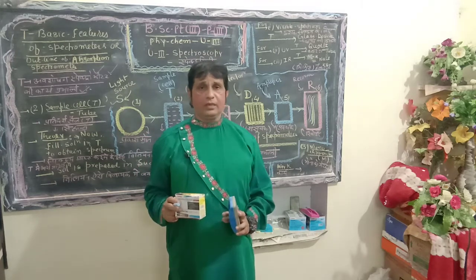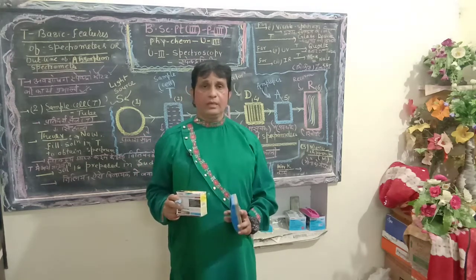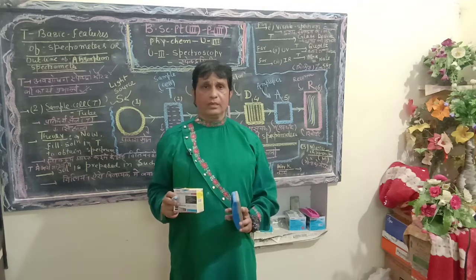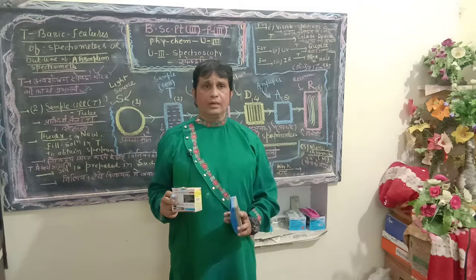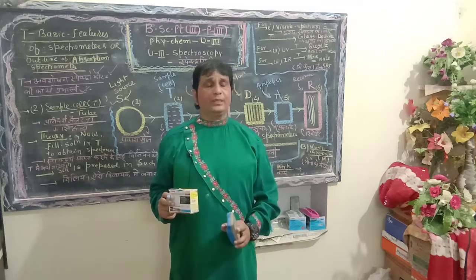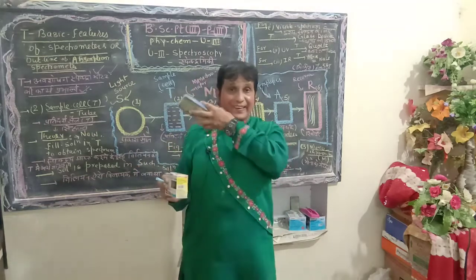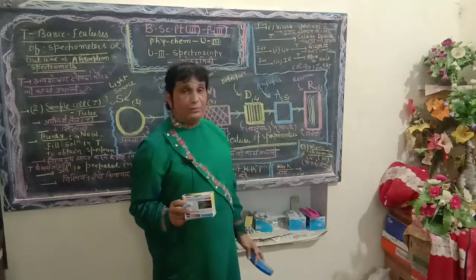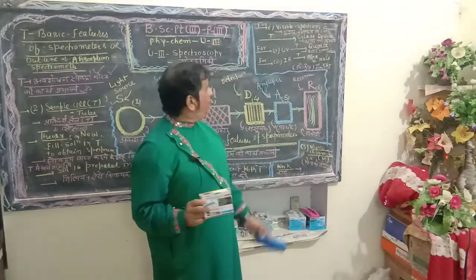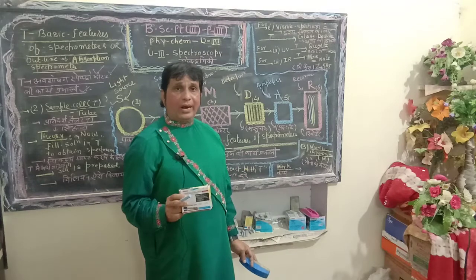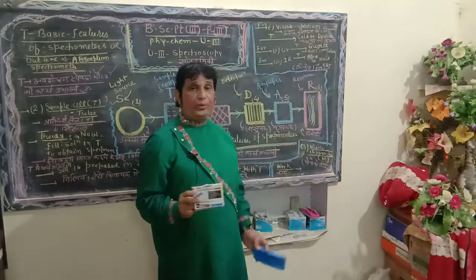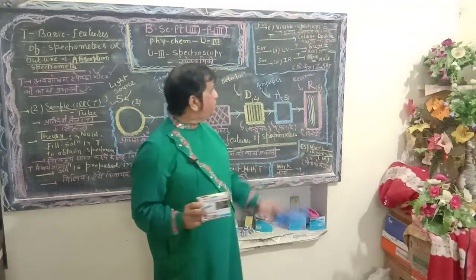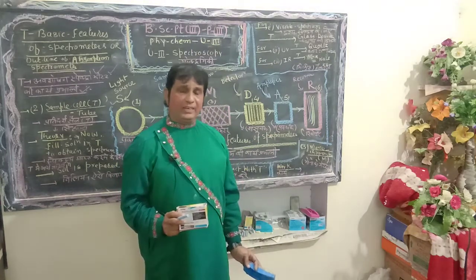For the production of visible spectrum, a glass device is used for sample cell T. For the production of ultraviolet spectrum, a quartz tube is used.